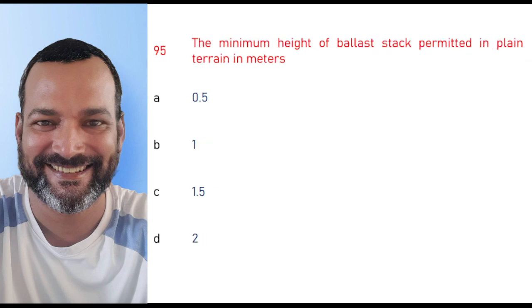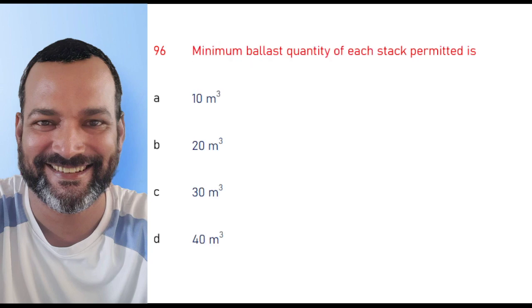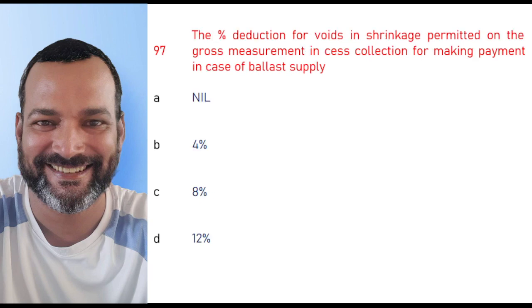The minimum height of ballast stack permitted in plain terrain is 1 meter. The minimum ballast quantity of each stack permitted is 30 cubic meters. The percentage deduction for void and shrinkage permitted on the gross measurement in sales collection for making payment in case of ballast supply is nil.